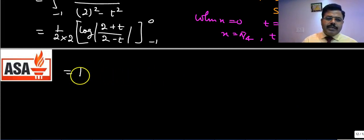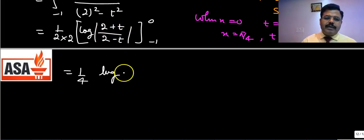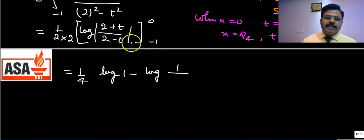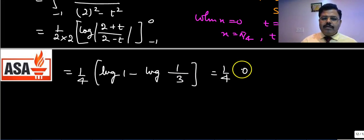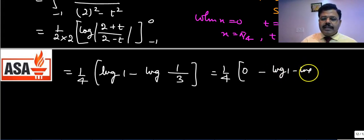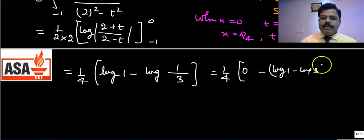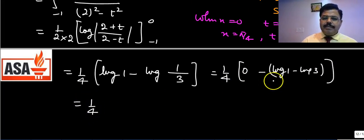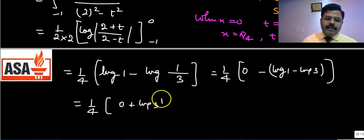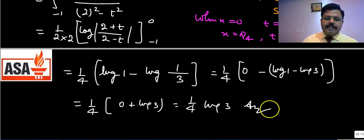Using the formula ∫dt/(a²−x²) = (1/2a)·log|(a+x)/(a−x)|, with a=2: [(1/4)·log|(2+t)/(2−t)|]₋₁⁰. At t=0: (1/4)·log(2/2) = (1/4)·log1 = 0. At t=−1: (1/4)·log(1/3) = −(1/4)·log3. So the answer is 0 − (−(1/4)·log3) = (1/4)·log3.